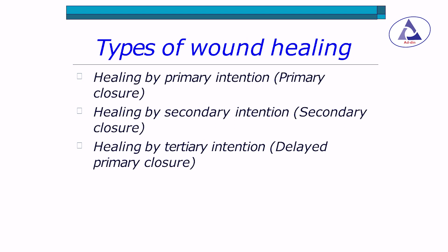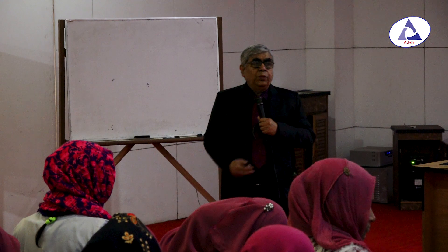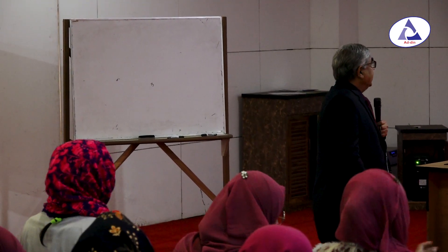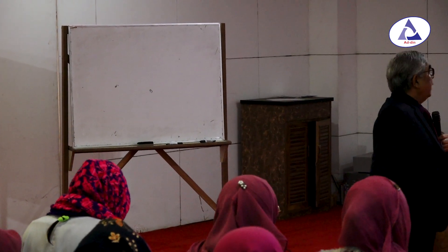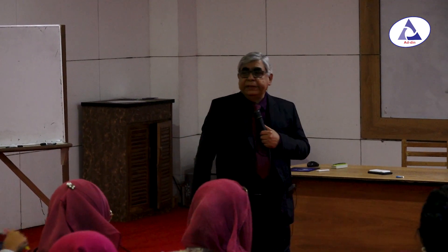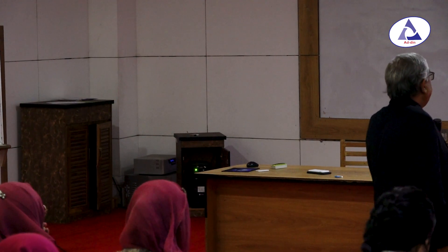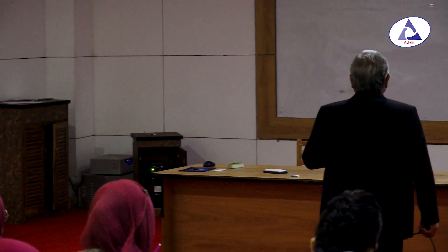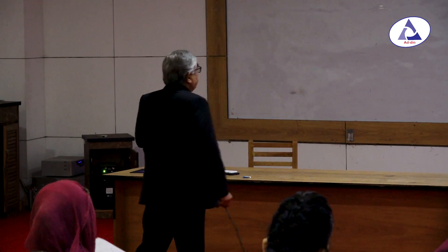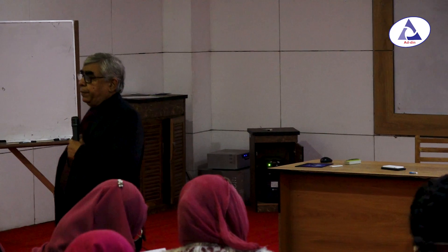We have read about wounds, the types of wounds, and how they are caused. When there is a wound, it must be healed. We know that there are three types of processes by which a wound heals: number one is healing by primary intention or primary closure, number two is healing by secondary intention or secondary closure, and number three is healing by tertiary intention, that is delayed primary closure.